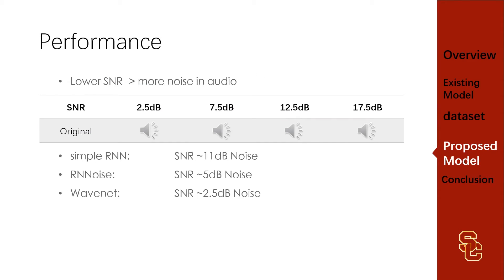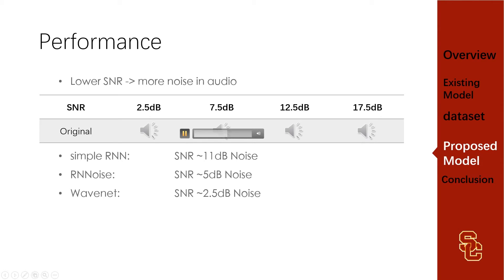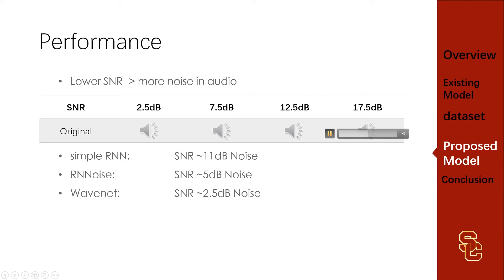Now let's see the performance. First, let's get an impression of SNR — signal-to-noise ratio. Lower SNR value means more noise in the audio. For the single RNN model, it can denoise audio at 11 dB SNR. RN Noise handles 5 dB, and WaveNet handles 2.5 dB, so WaveNet has the best performance among these. Let's compare our model with WaveNet directly.